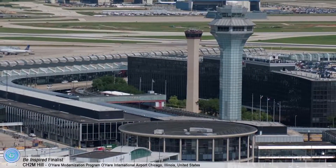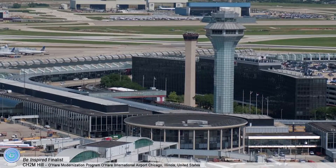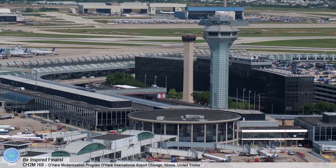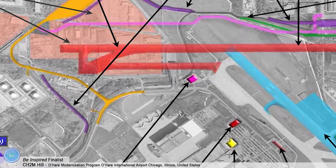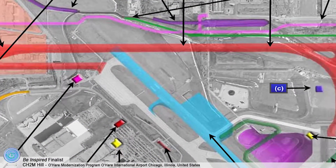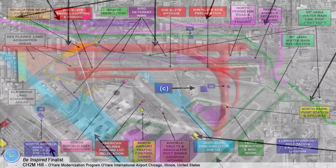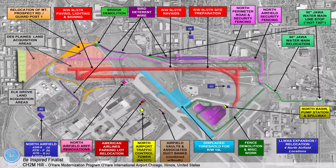The O'Hare Modernization Programme constructed a new runway, relocated and extended existing runways, and created a terminal and gate facility. Using MicroStation, Geopak, and collaborating with ProjectWise, the project team reconfigured an outdated intersecting runway system into a modern parallel runway configuration, substantially reducing air traffic delays and increasing capacity.